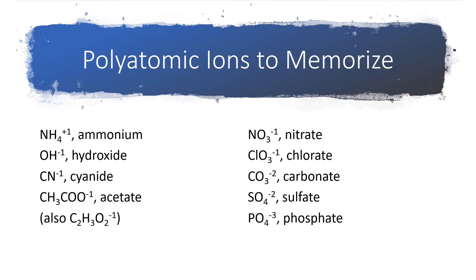So, nitrate has 3, whereas sulfate has 4 oxygens. So, there's really just no easy way. You just have to memorize these.